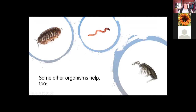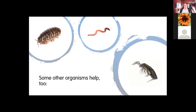Larger creatures also help — nematodes, springtails, pill bugs, and of course the king of the heap: the earthworm. Earthworms are extremely good at converting organic waste into soil usable by plants. However, they aren't native in every biome. In northern coniferous forests of Saskatchewan and further north, earthworms were killed off in the last ice age, so it's normal not to find them there.